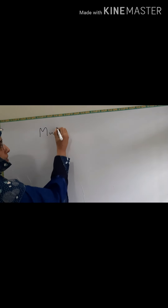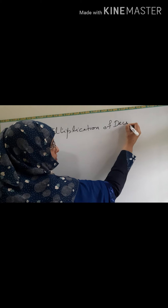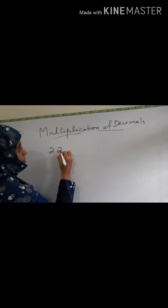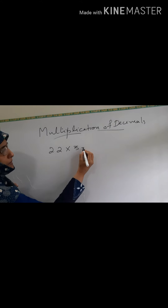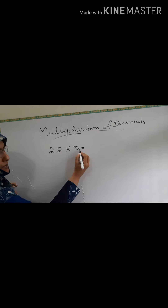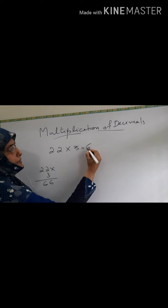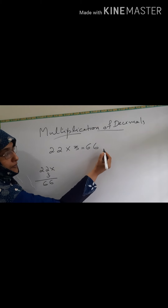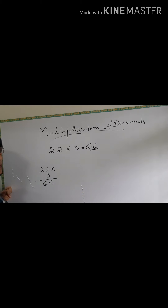Next is multiplication of decimals. Take 2.2 into 3. When you are multiplying 2.2 into 3, you multiply it as usual — without the decimal, you multiply. When you remove the decimal it is 22. So 22 into 3 is 66. Write that number, 66. Now, after the decimal there is only 1 digit. So in the answer, start from the right side and after 1 digit you insert a decimal. So the answer will be 6.6.